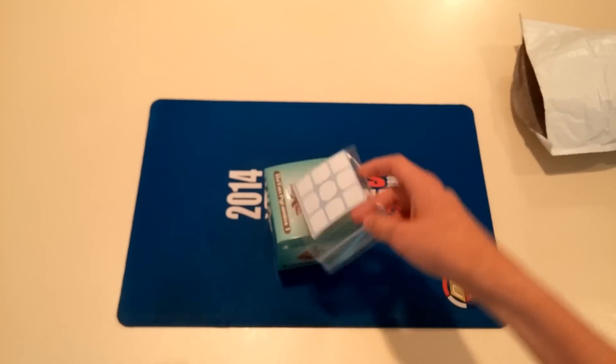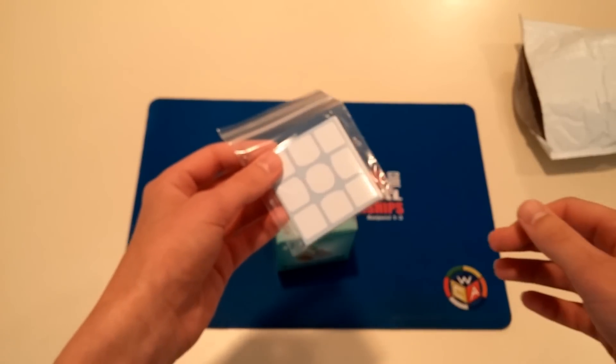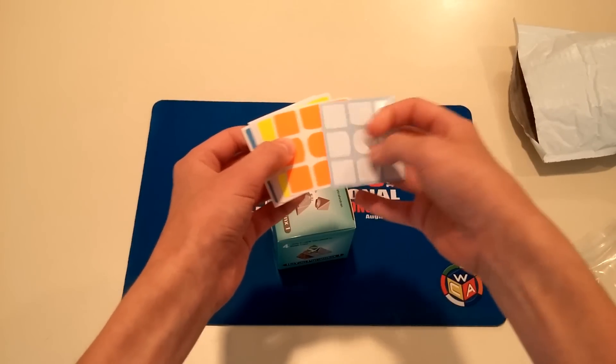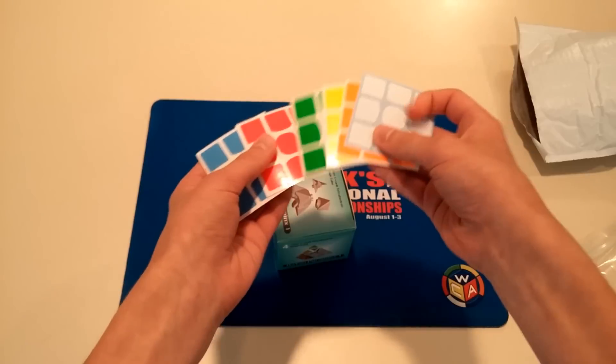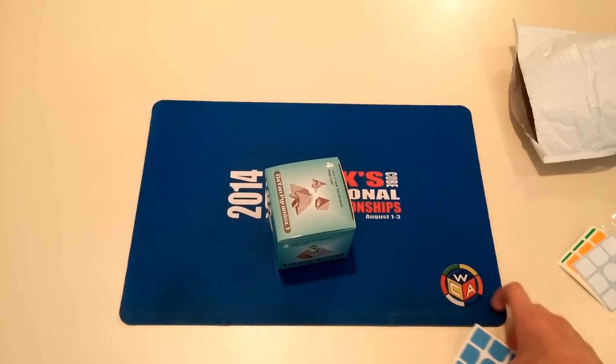Okay, so I have Gans 357 stickers in here, which look pretty nice. I don't really know what these shades are even called, but this is what I ordered. I think it's Fulbright's, pretty sure. So I'll probably be re-stickering my Gans 357 with that.